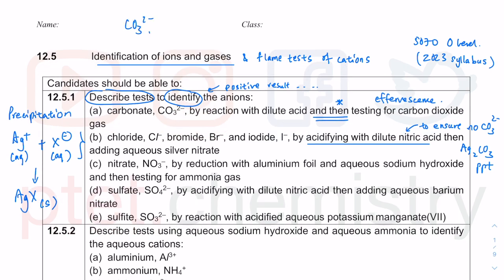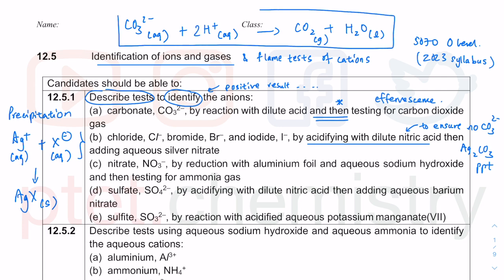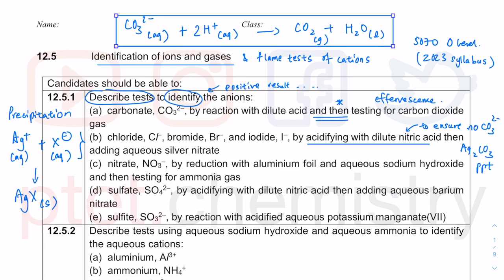For the carbonate plus acid ionic equation, CO₃²⁻ could be aqueous (e.g., sodium carbonate, ammonium carbonate, potassium carbonate — all soluble) or solid if it's a group 2 carbonate. The ionic equation shows only the important ions involved in the reaction: carbonate plus acid gives CO₂ gas and water, which don't dissociate easily into ions unlike the salt formed.